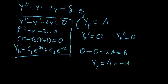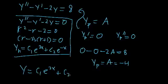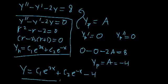We've found a homogeneous solution and a particular solution, so the general solution is equal to the sum of those two: y = c₁e^(2x) + c₂e^(-x) - 4. That's the general solution to this non-homogeneous differential equation.